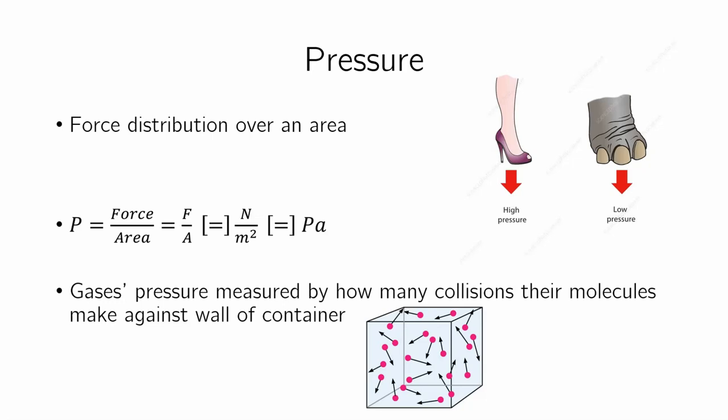Force is measured in newtons, area is measured in SI units and meters squared, and the SI unit for pressure is known as the Pascal. Newton's per meter squared Pascal measures the force distribution over some sort of an area.